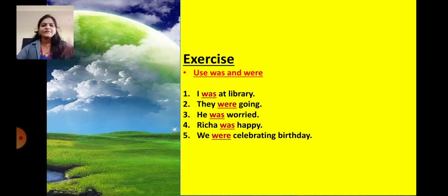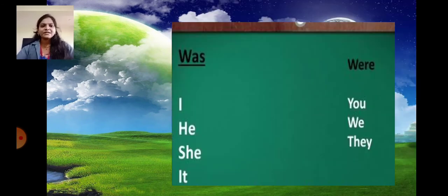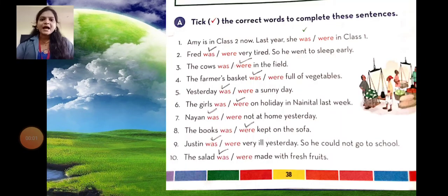Now students, after learning about was and were, let's do this exercise for more practice. Use was and were: I was at the library. They were going. He was worried. Richard was happy. We were celebrating birthday. As we learned, with I, he, she and it we use was. With you, we and they we use were.